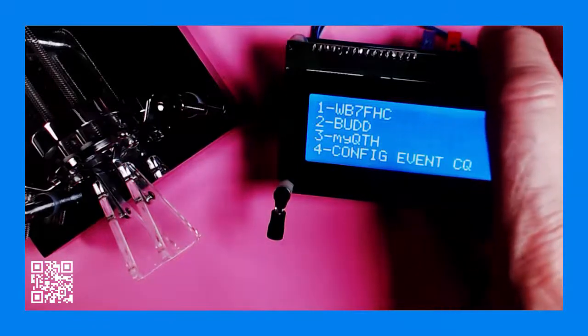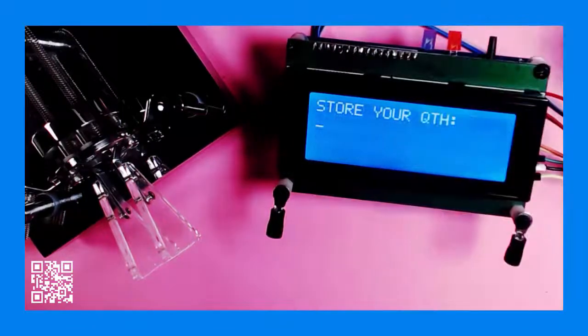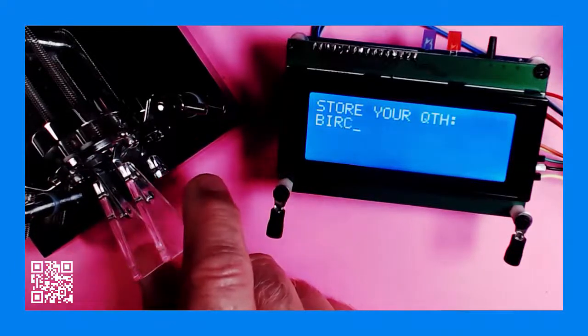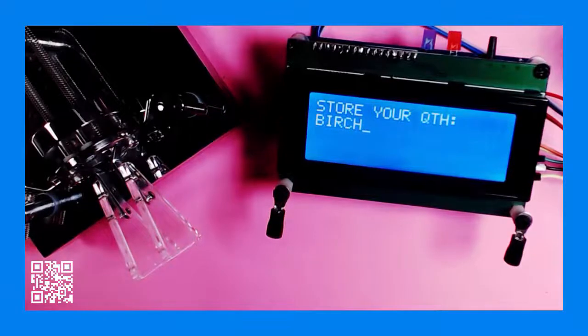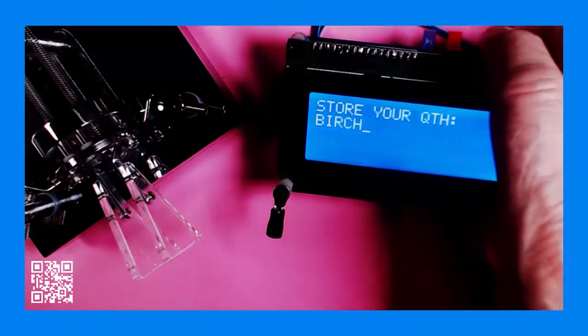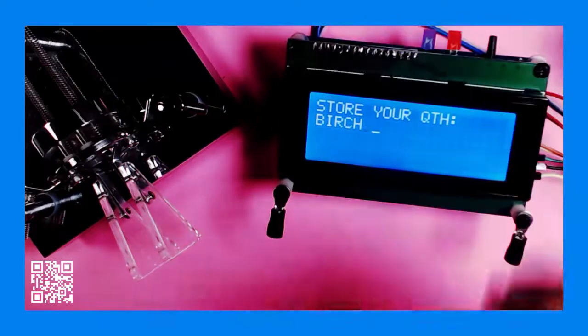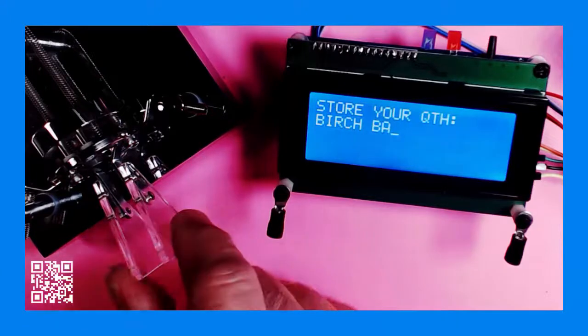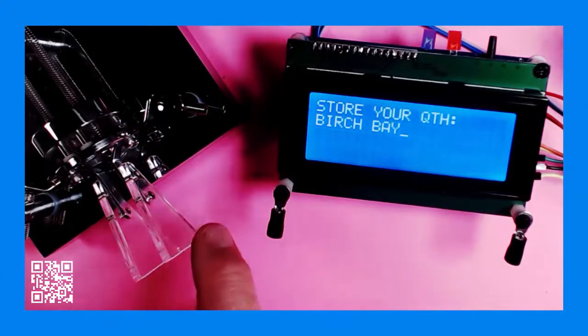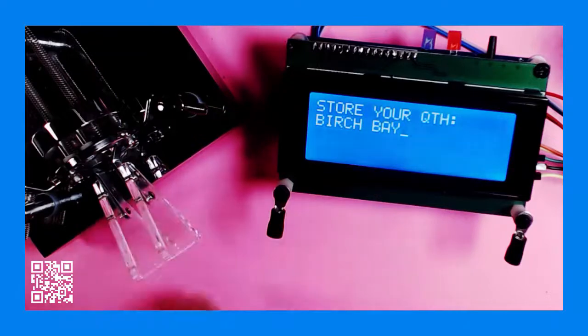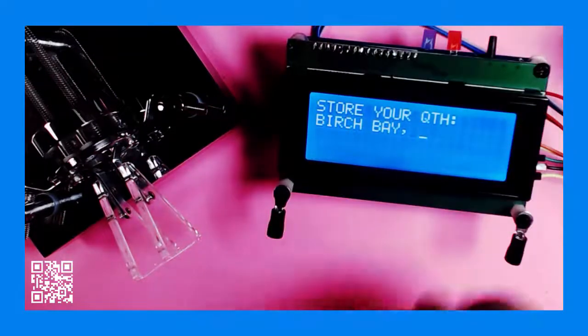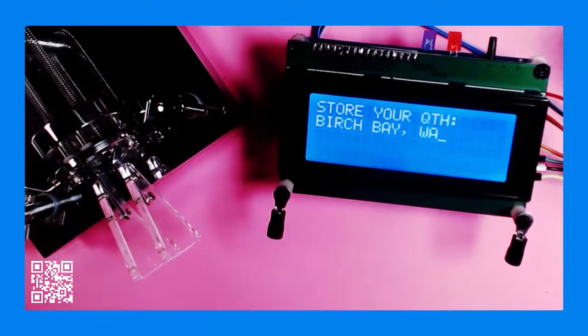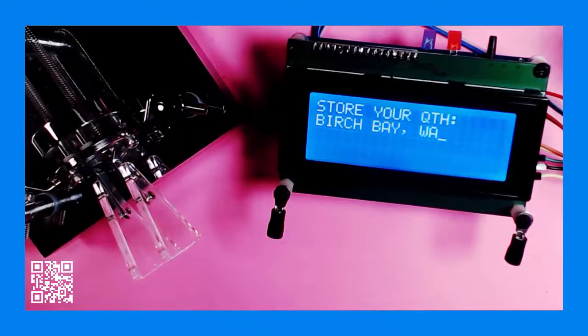then my QTH. I want to put a space in here. To do that, I'll hold the function key down for two beeps. The cursor has moved over. Now put in a comma, another space, and then my state. Now I'm going to put in a period, but let's say I make a mistake and I don't send it right.